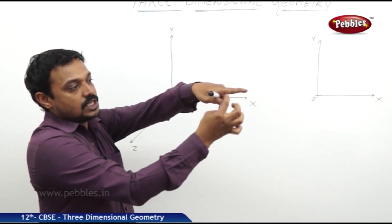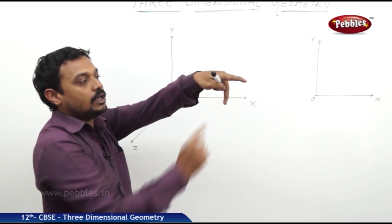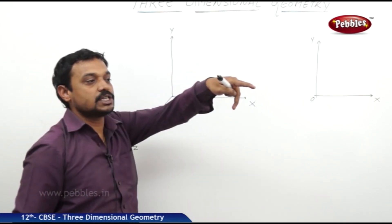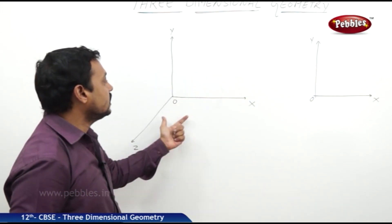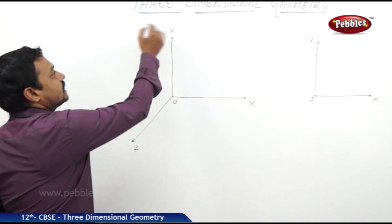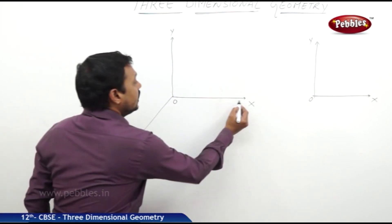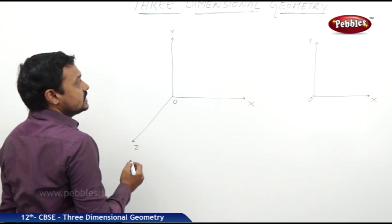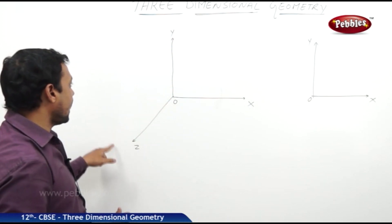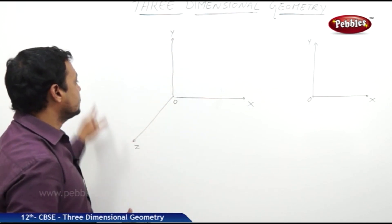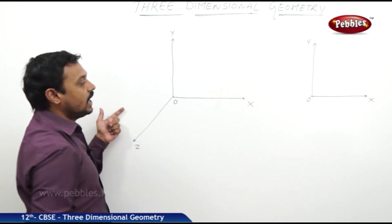So we have x-axis, y-axis, and z-axis — three mutually perpendicular axes — and the point of intersection is the origin. Now, the plane determined by the x- and y-axes is called the xy-plane. The plane determined by the y- and z-axes is called the yz-plane, and the plane determined by the x- and z-axes is called the xz-plane.